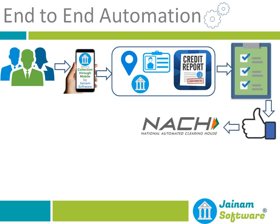Once the loan is approved, the next step is signing the e-mandate. The software will generate a link and send a message to the customer. The customer will sign the e-mandate using UPI, net banking, or debit card. Once active, the borrower's bank will approve the e-mandate and it will show as active in your mobile app. Then you can do the payout — transferring funds from your account to the borrower's account.